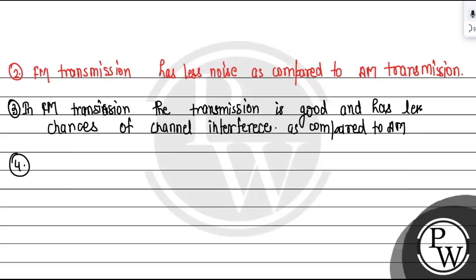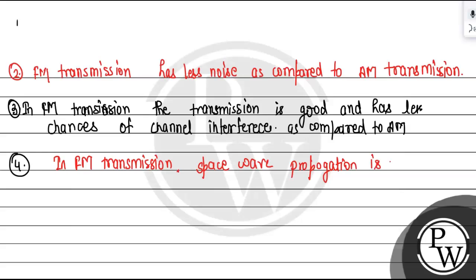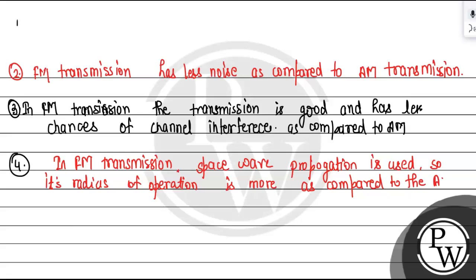The fourth advantage: in FM transmission, space wave propagation is used. So its radius of operation is more as compared to Amplitude Modulation.